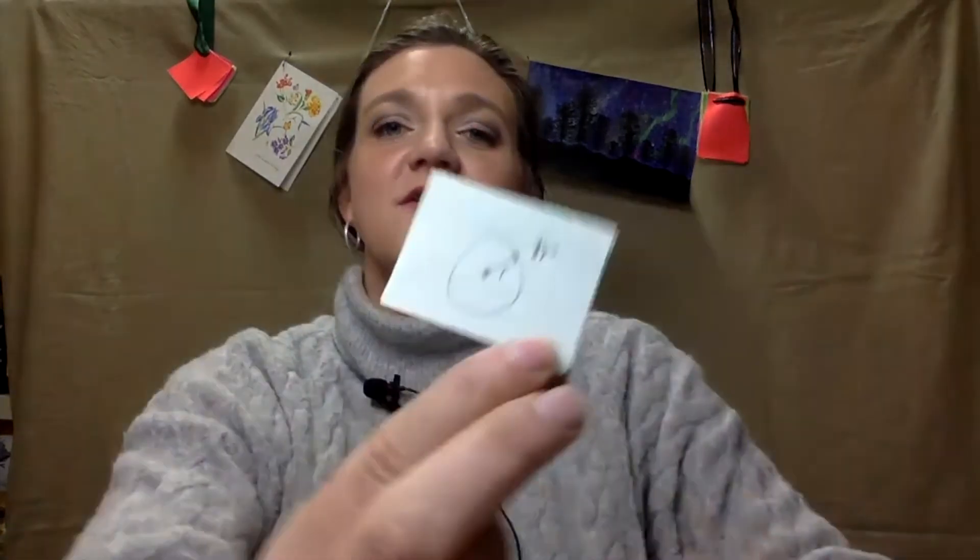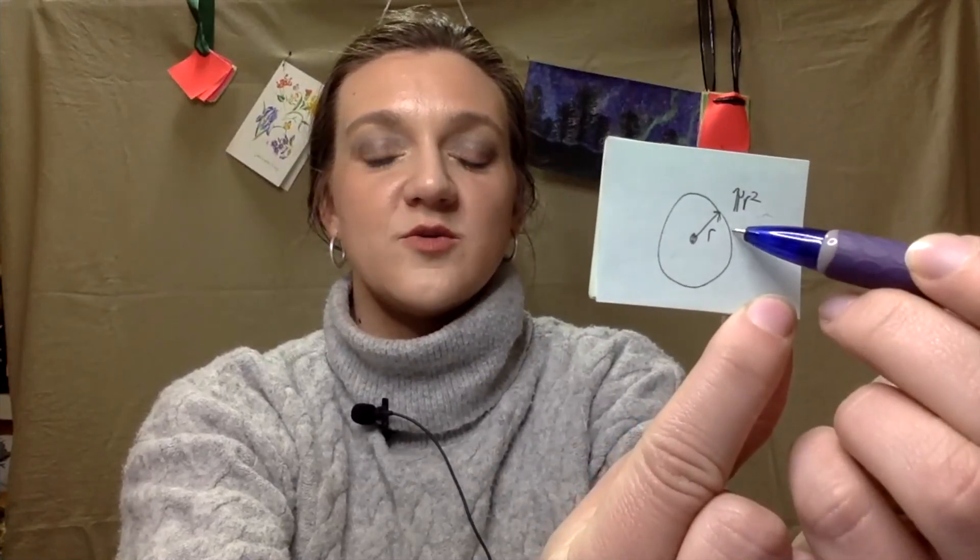So if you look here if you want the area of a circle you're going to go radius which is from the middle to the nearest side of your circle and then you will have pi radius squared for your area of your circle. That is your equation for a circle.